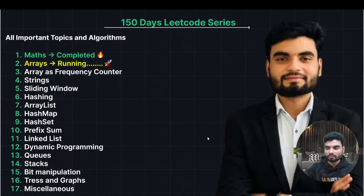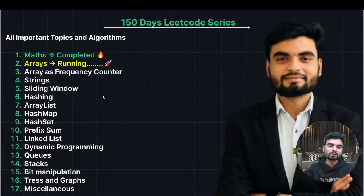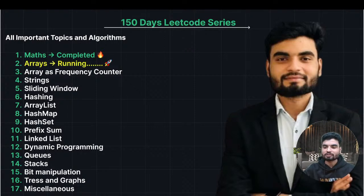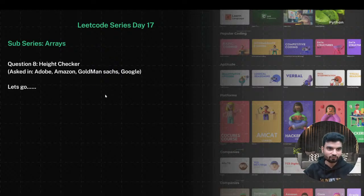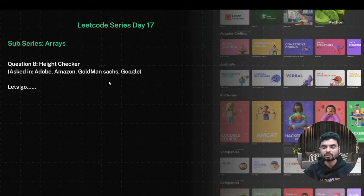We are running a 150-day series where we'll be solving all the important topics of DSA, especially on LeetCode. In the sub-series on arrays, today we have Question 8: Height Checker. This question has already been asked at Adobe, Amazon, Goldman Sachs, and Google.